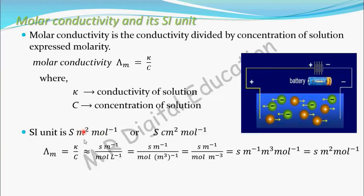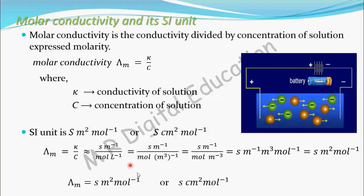If you express this in centimeter cube instead of meter cube, then the unit will be siemen centimeter square per mol instead of meter square. So the unit of molar conductivity is siemen meter square per mol or siemen centimeter square per mol.